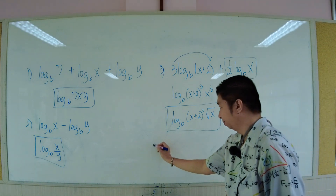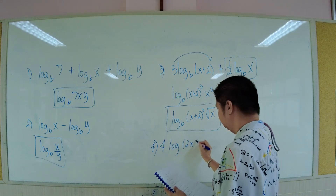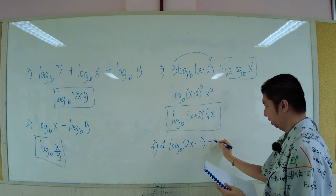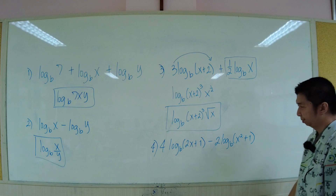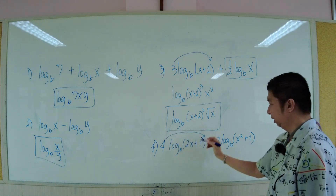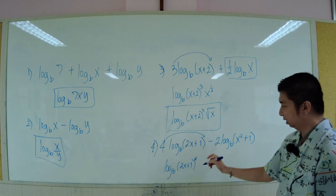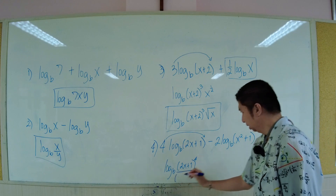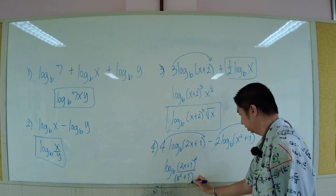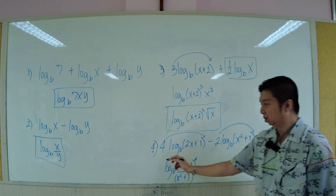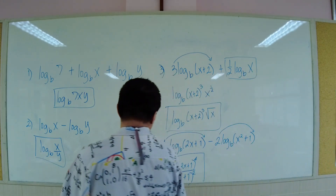Number 4: 4·logarithm of (2x+1) base b, minus 2·logarithm of (x²+1) base b. The coefficients become exponents, so we get (2x+1) to the power of 4. Since it's minus, that means divide, and the 2 is an exponent: (x²+1) quantity to the power of 2. So the answer is log base b of (2x+1)⁴ over (x²+1)². No cancellation — just arrange.